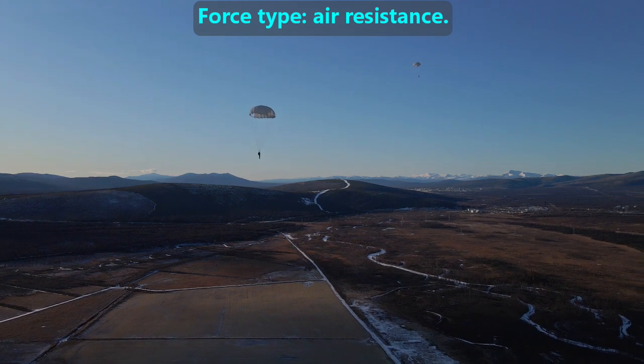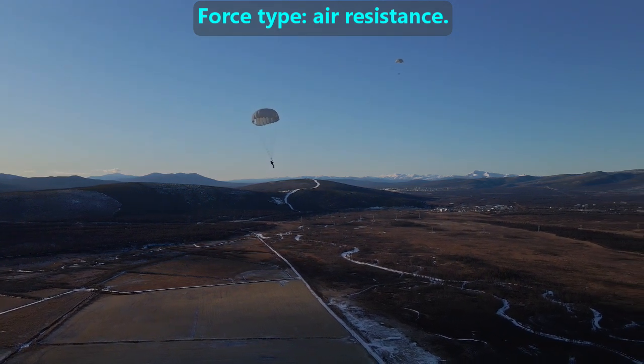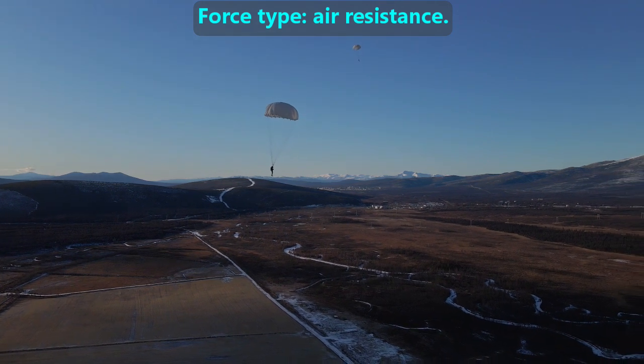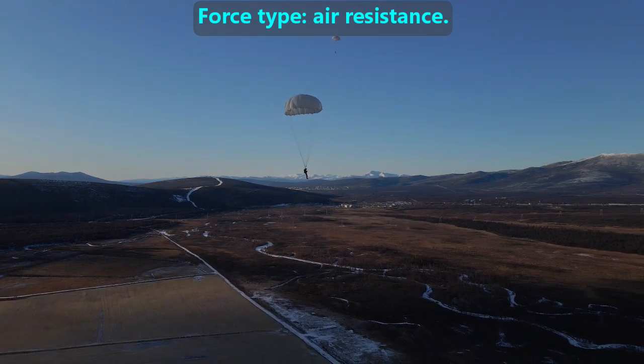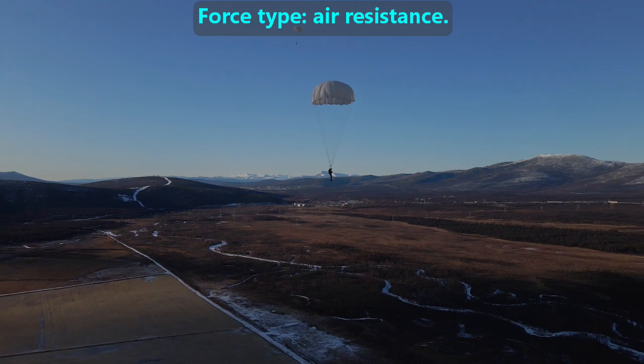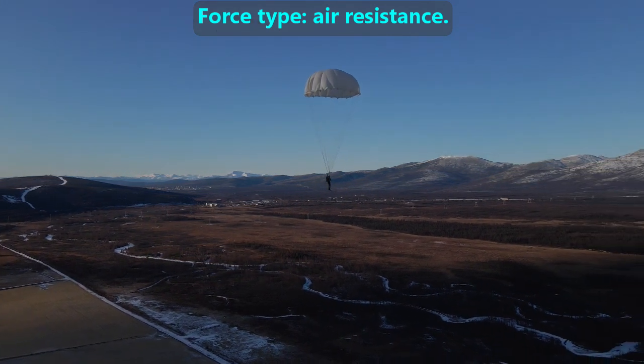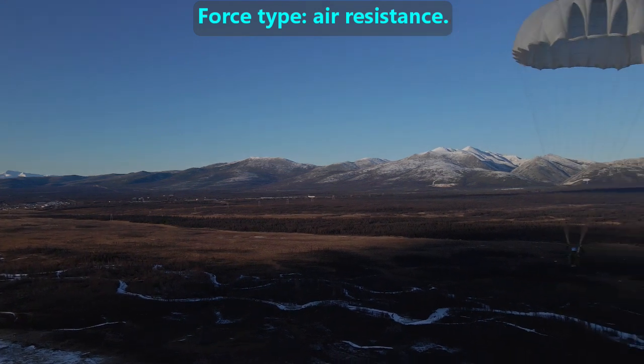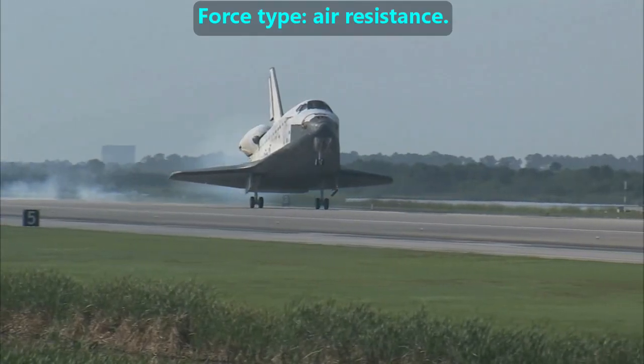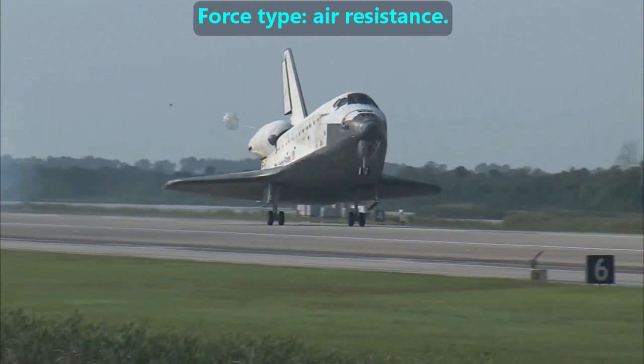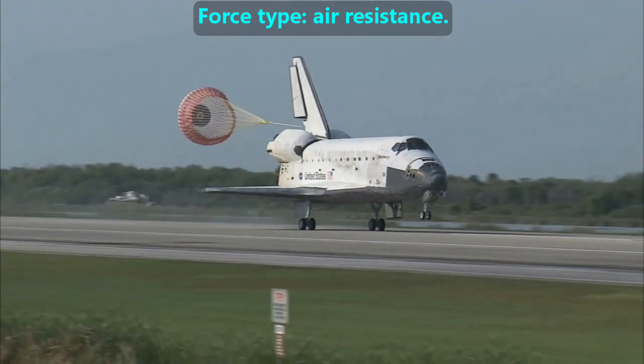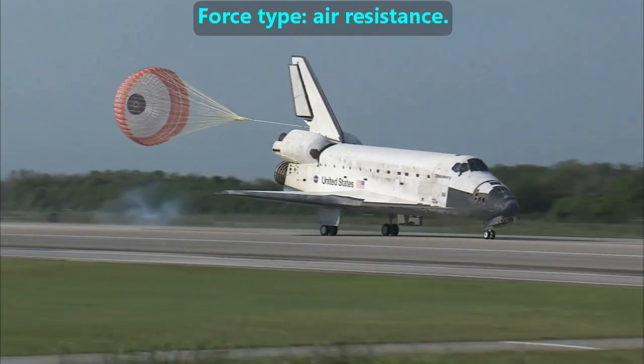The next force is called air resistance. This force always pushes against an object moving through the air, and often slows that object down since it pushes in the opposite direction that the object is moving. The most extreme examples are parachutes, which help skydivers land safely after jumping out a plane, or to slow down vehicles that are going horizontally, as was done with the space shuttles. Parachutes are sometimes used by drag racing cars and military jets.